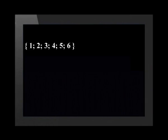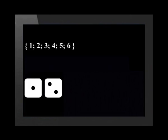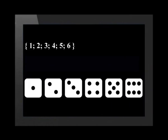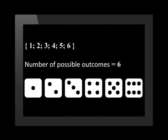Now that we've found the number of desired outcomes, let's list all the possible outcomes. The possible outcomes of rolling a dice are 1, 2, 3, 4, 5, or 6. This means that the total number of possible outcomes is 6, as there are 6 different outcomes we could get when rolling a dice.